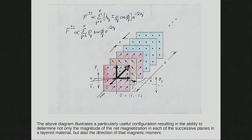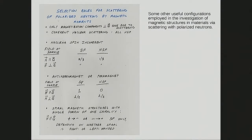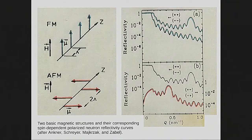By writing out the structure factor and summing contributions from all planes back through the crystal, you get the complete picture: a depth profile of not only the magnitudes of magnetization in successive planes, but how the moments orient in those planes — the full three-dimensional magnetic architecture. This is extremely powerful.